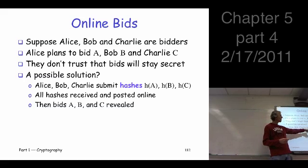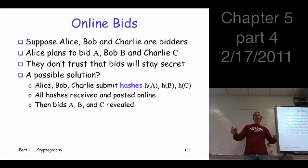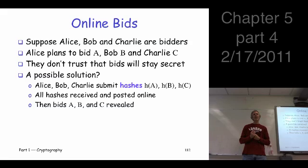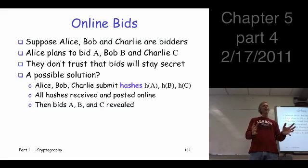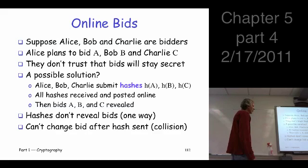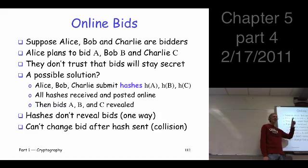Now suppose the hashes are posted publicly and Alice submits her actual bid. I say, 'Hey Bob, here's Alice's bid for 10 bucks.' Does that help Bob? Why can't he change his bid? Because hash functions are collision resistant — he'd have to find another value that hashes to the same thing, and he can't do that. So we're relying on two properties: hashes don't reveal bids because they're one way, and bid order doesn't matter because of collision resistance.